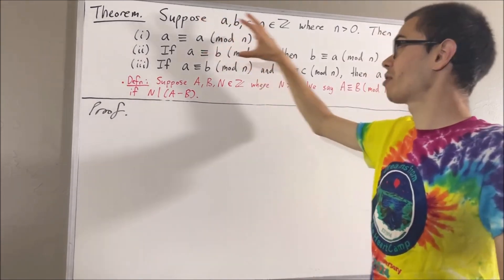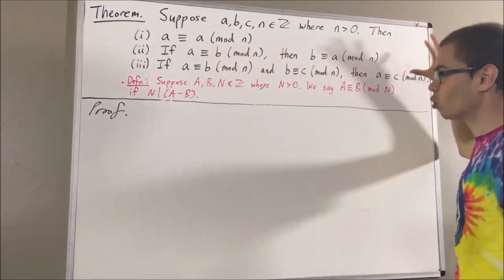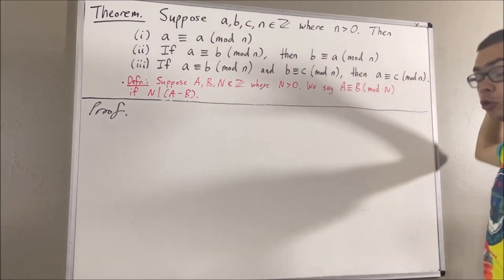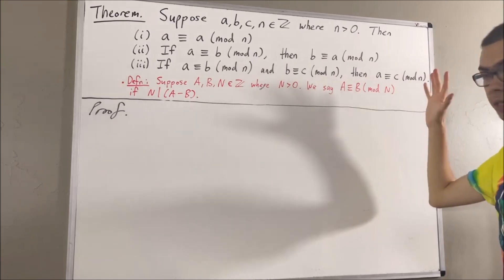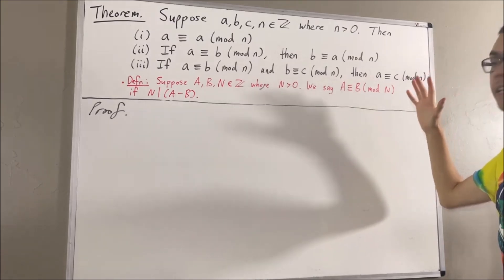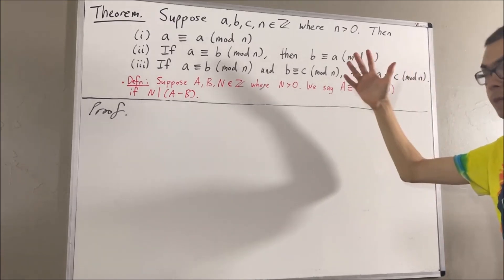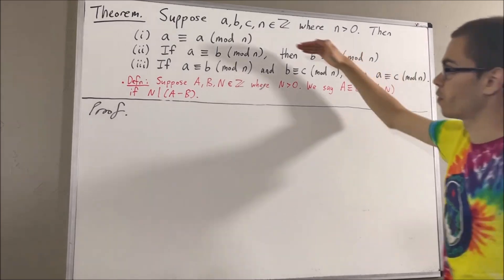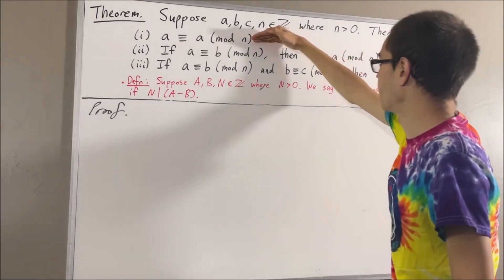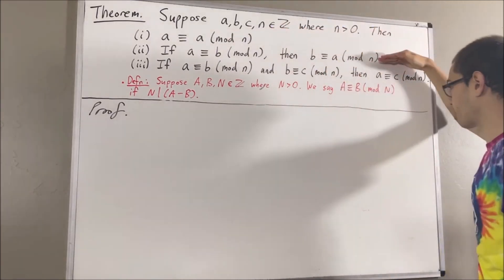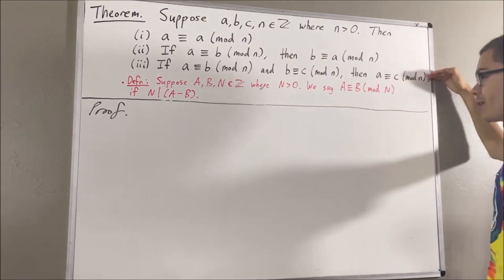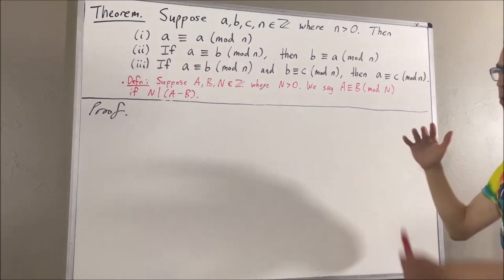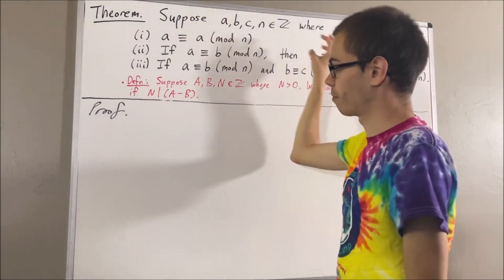Now, in this theorem, we're essentially trying to prove that congruence modulo n is an equivalence relation on the integers. We're trying to prove that it's reflexive, symmetric, and transitive. So now let's get into proving this theorem.